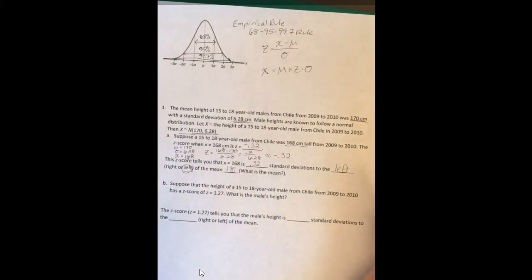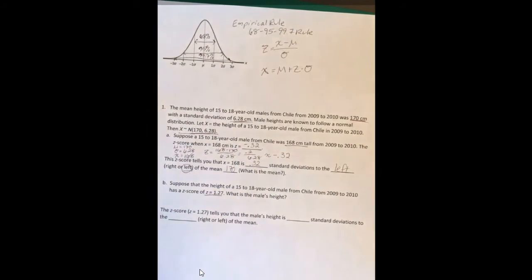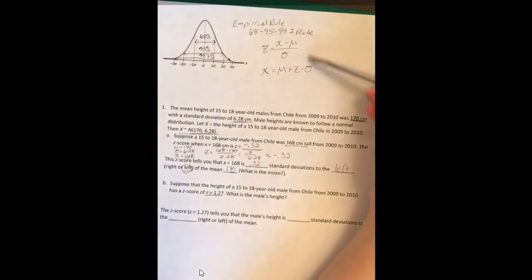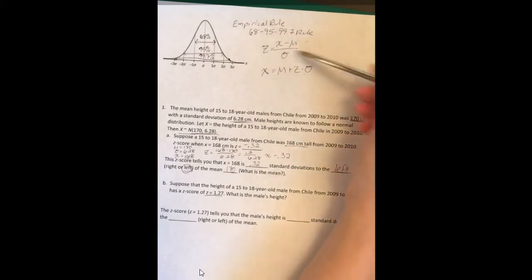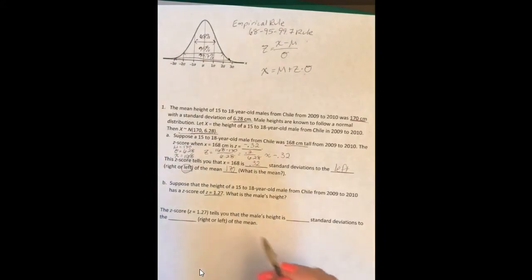Part b: suppose the height of a 15 to 18-year-old male from Chile from 2009 to 2010 has a z-score of 1.27. What is the male's height? You can use either one of these. This one is the easier one. It's already done all of the algebra for you and moving everything around. So that is the one we are going to use.